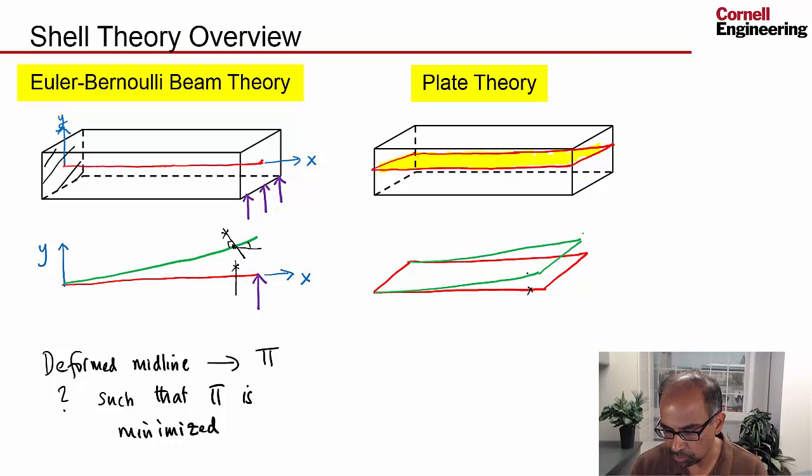If I take a point over here, it's going to move. Actually, under the influence of a transverse load, it's going to move only in the transverse direction, so it's going to move over here. And then you say, the normals are just going to stay normal. So if I had a normal like that over here, that's going to still remain a normal.